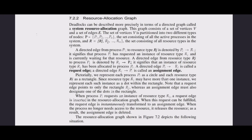Resource Allocation Graph: Deadlocks can be described more precisely in terms of a directed graph called a system resource allocation graph. This graph consists of a set of vertices V and a set of edges E. The set of vertices V is partitioned into two different types of nodes: P = {P1, ..., Pn}, the set of all active processes, and R = {R1, ..., Rm}, the set of all resource types in the system.